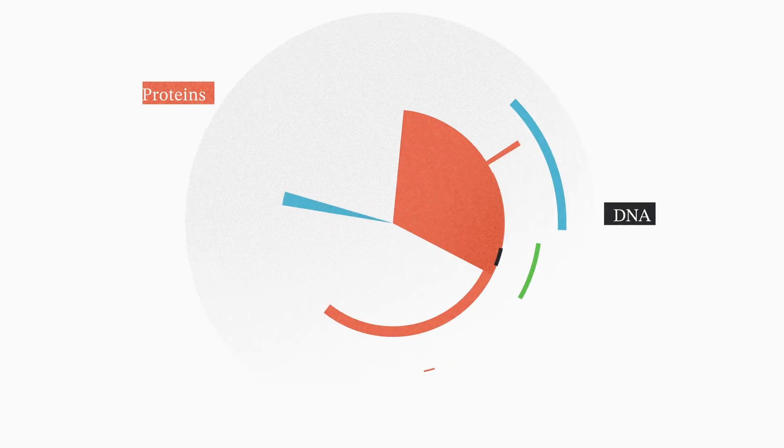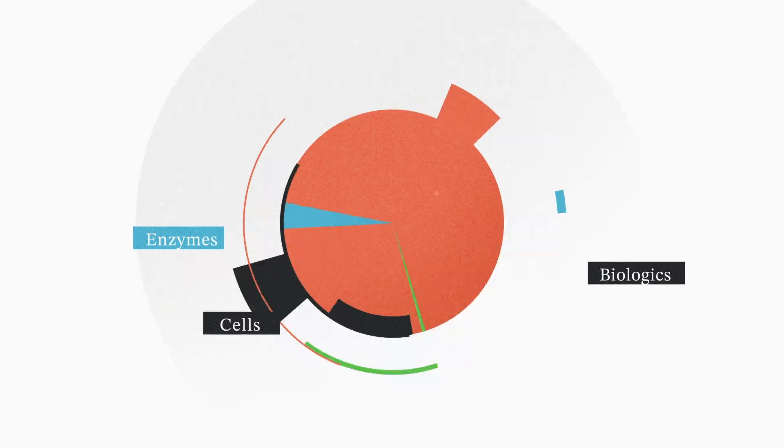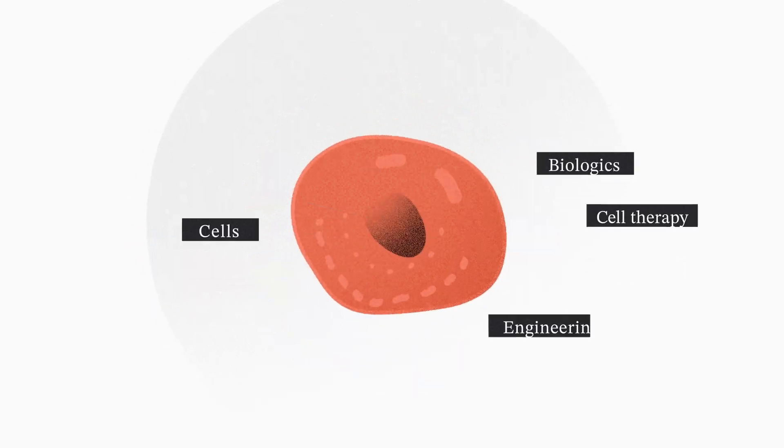Biology can arrange the individual atoms of a molecule, and biology can grow to fill a swimming pool-sized bioreactor. Today, we're talking about some foundry tech that we use to engineer cells for bioproduction, organized from the microscopic to the gigantic.